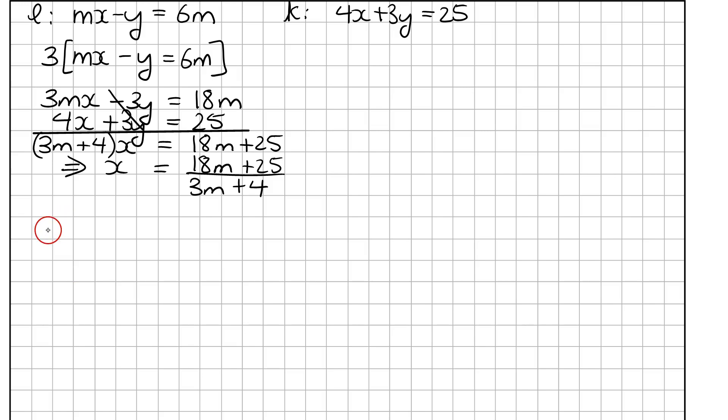So just not to be making life a little bit more difficult. So 4 times 18m plus 25 over 3m plus 4 plus 3y equals 25.